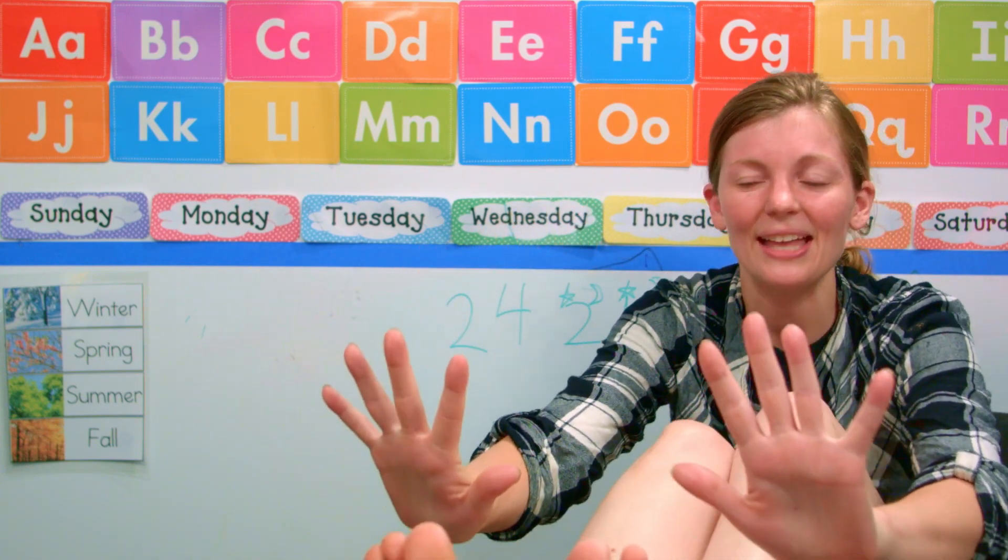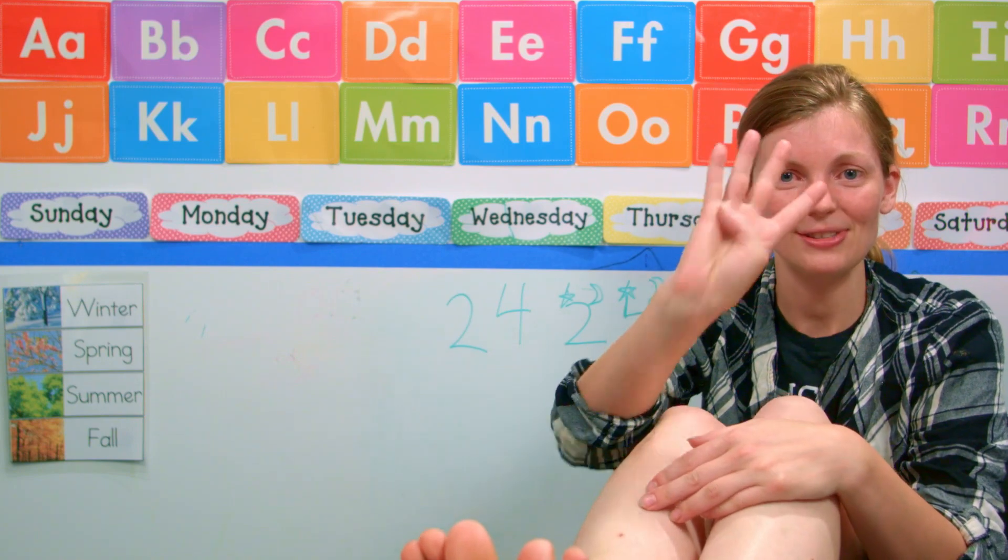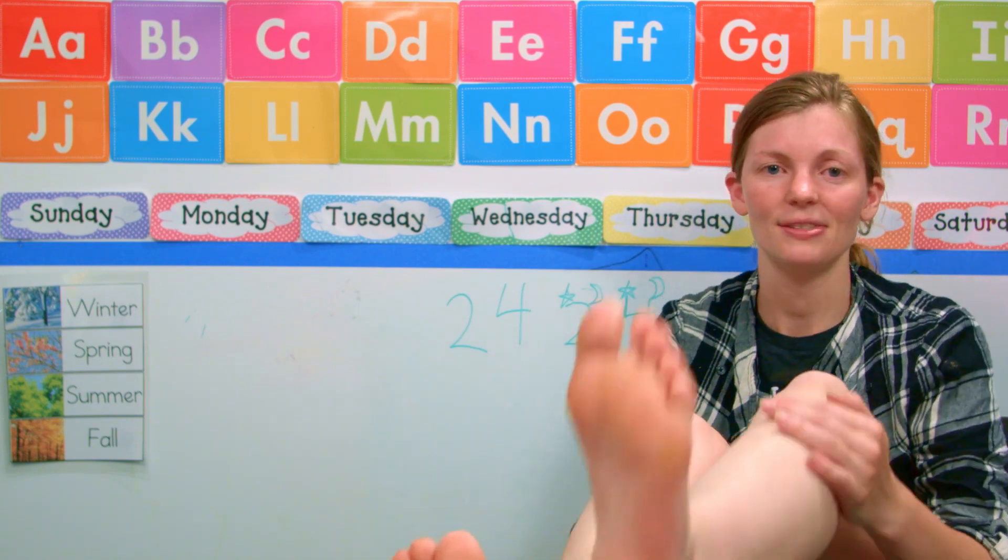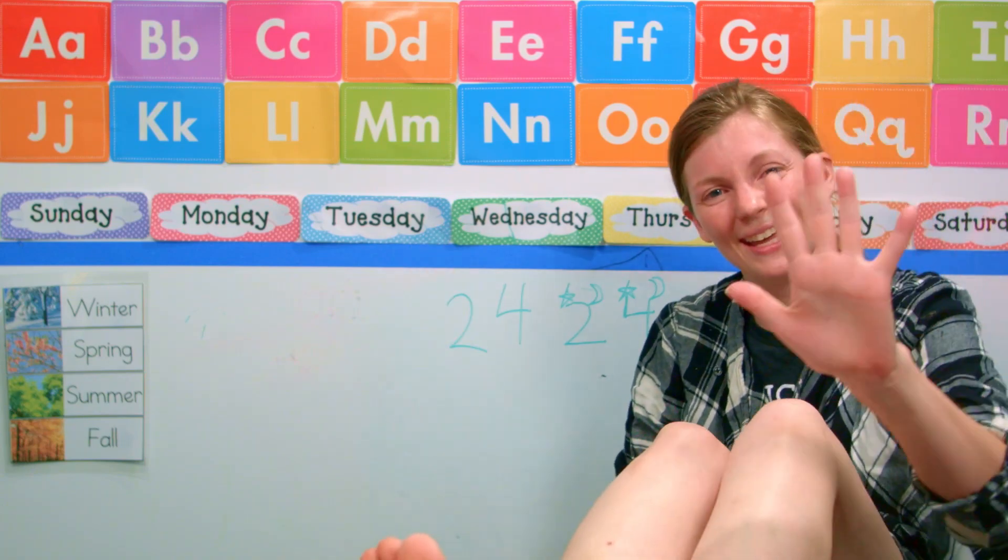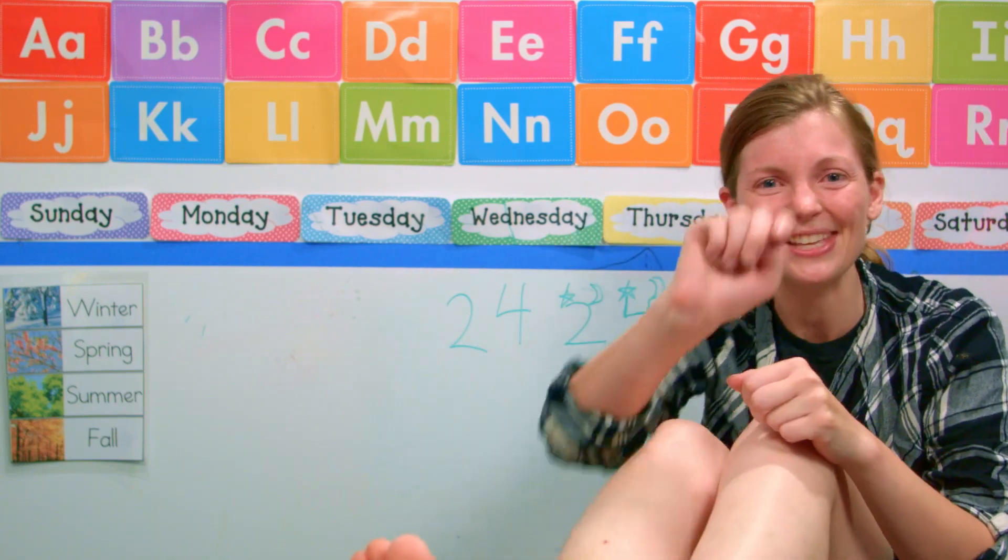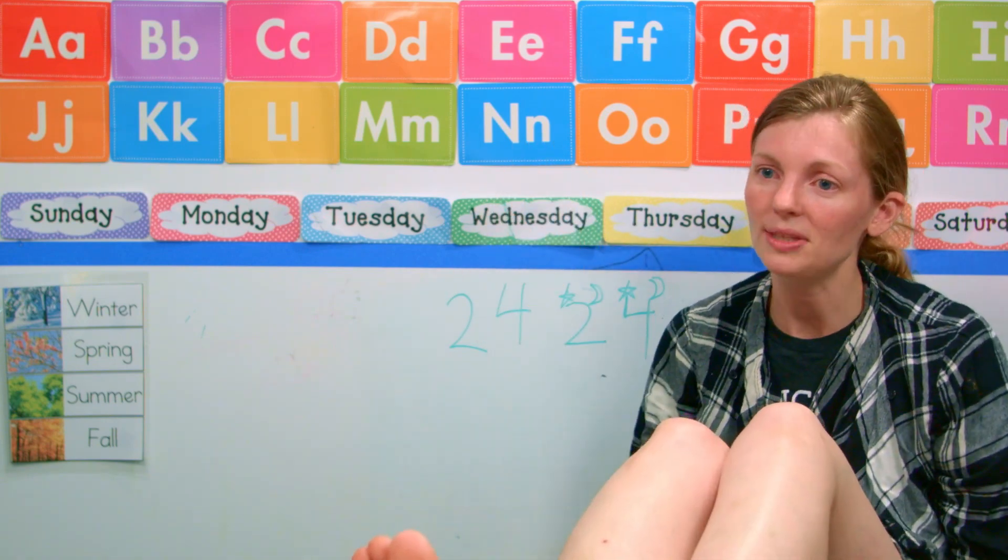There we go so we have five ten fifteen twenty, we have twenty and then can you give me four fingers at your house, four fingers nice. So we have ten or five ten fifteen twenty and then plus your four is twenty four, phew we did it.